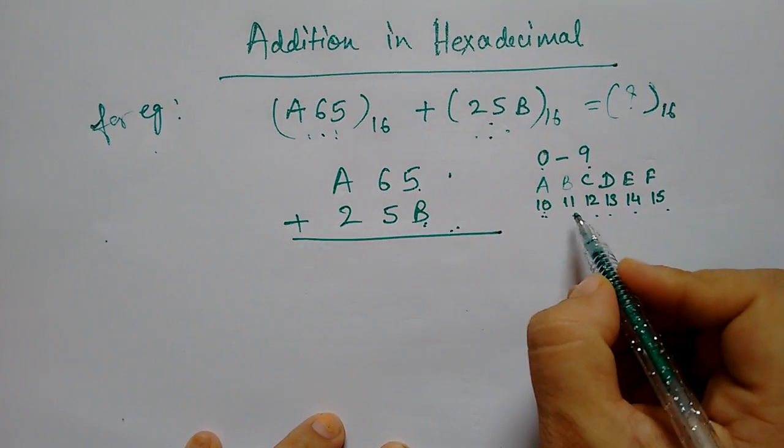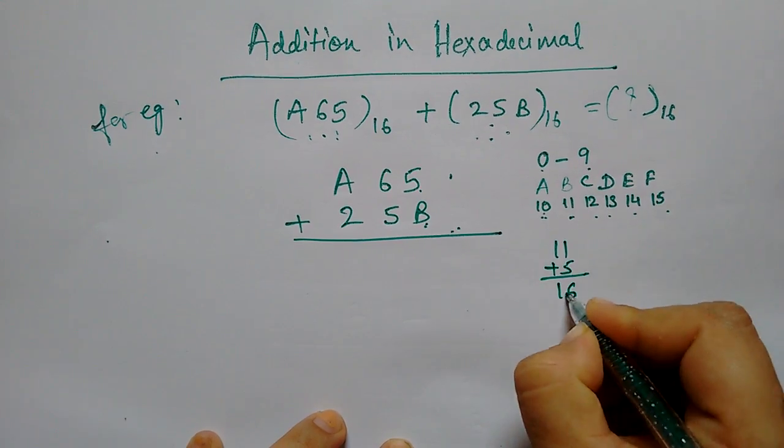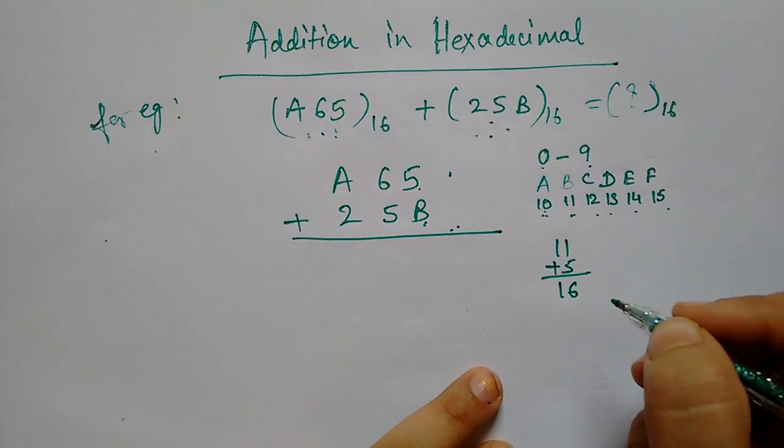Now, we write 5 plus B. What is B? 11. So, 11 plus 5. How much? 16.